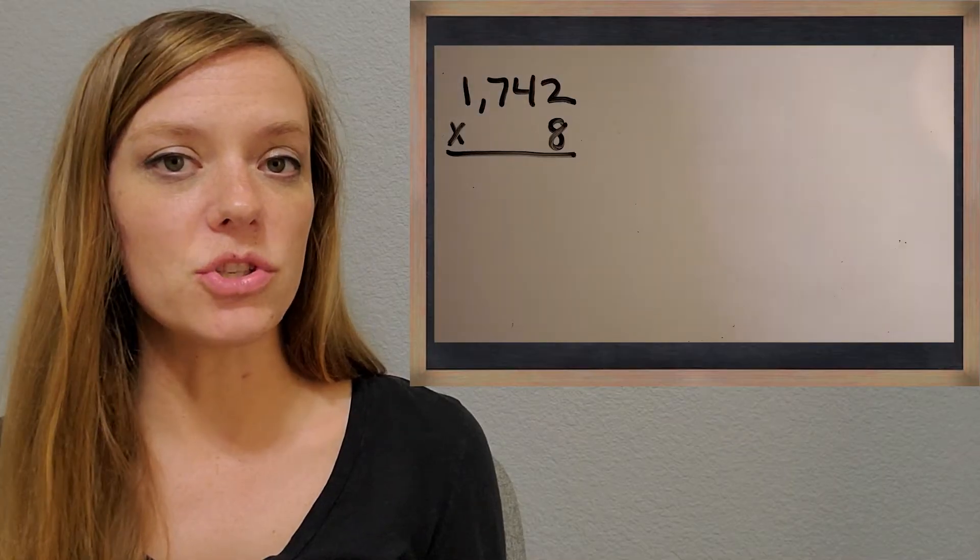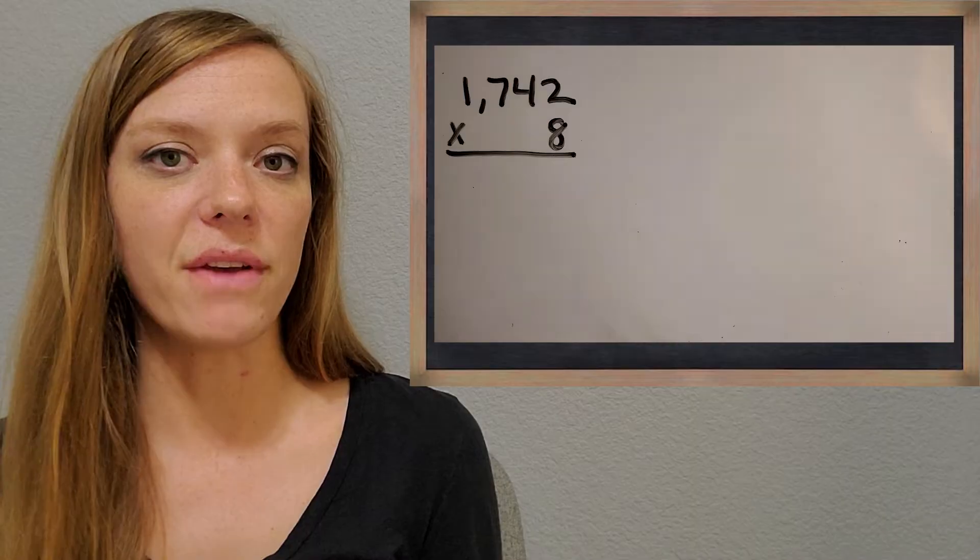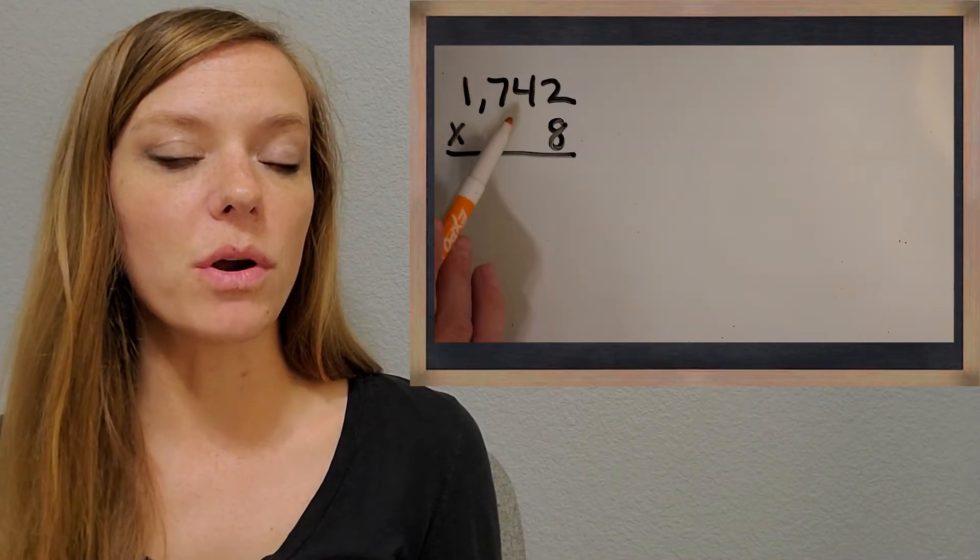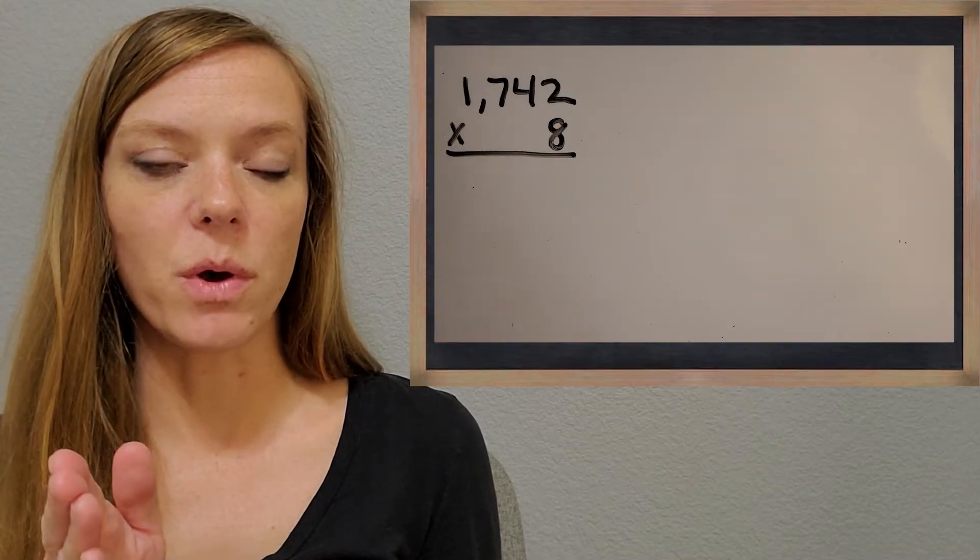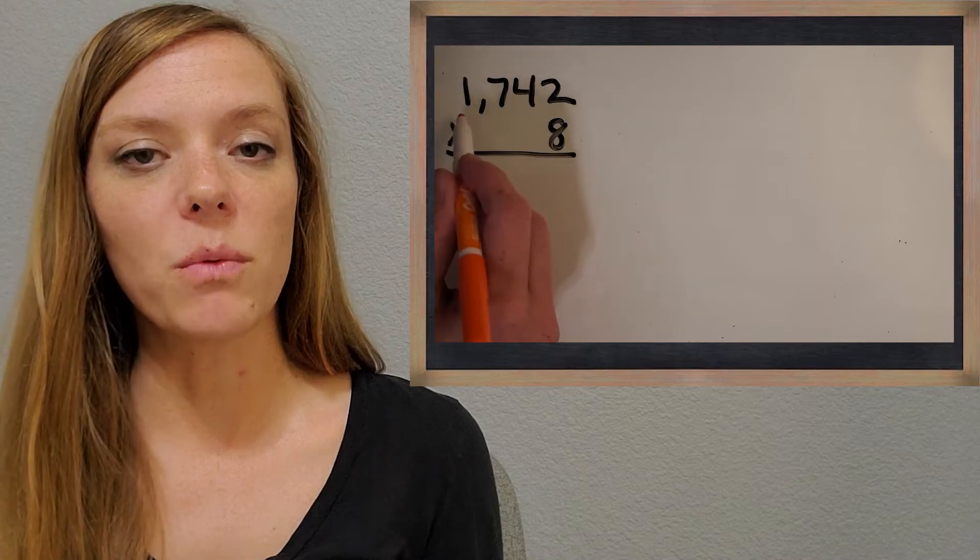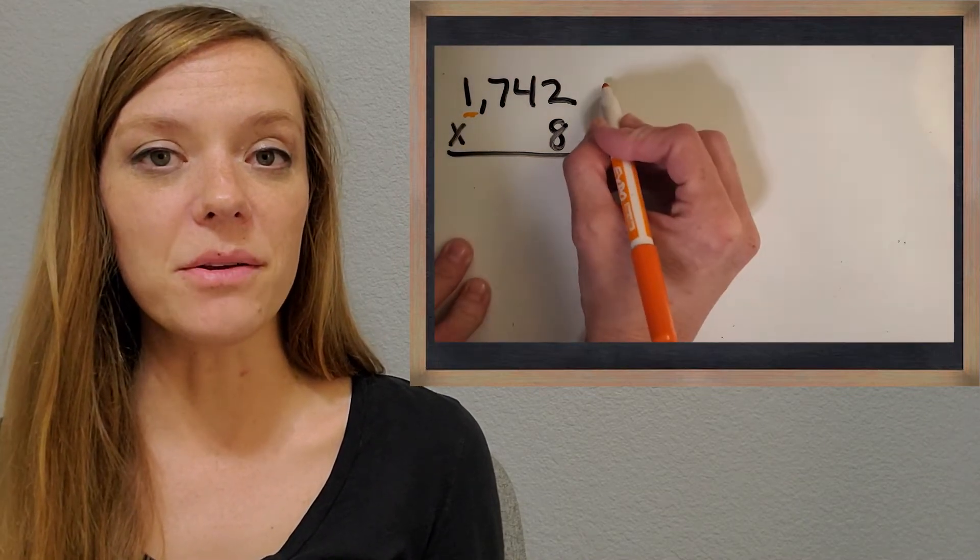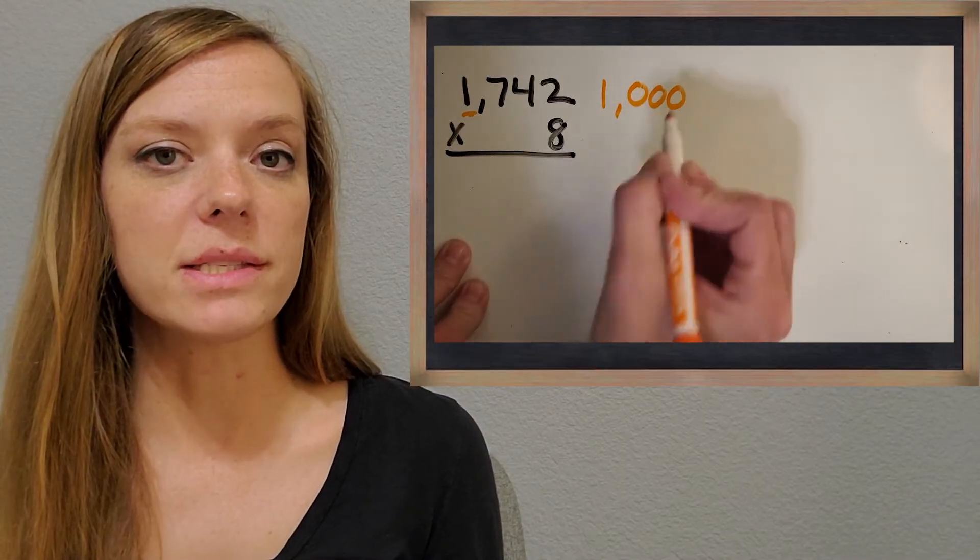So the first thing you want to do when you do partial products is to think about the place value of every digit and how much it's worth. What is its value? So for example, on this one, what is that one really worth? You got it, one thousand, since it's in the thousands place. We're going to write all of these down as we go.